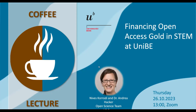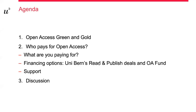Hello everybody. In the next few minutes I'm going to tell you about the fund of the University Library of Bern and other possibilities and how you can finance your gold open access application. First I will give you a short overview about the different ways of open access publishing and then I will sketch out what you are paying for when you pay APCs and what the possibilities are to finance your publication and where you can find some support.